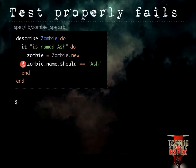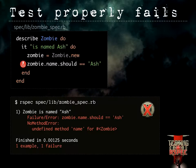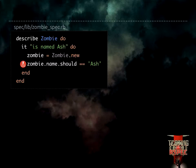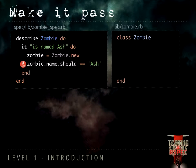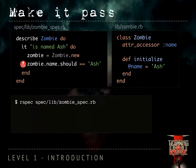Now if we run the test again it properly fails — we have our first failing valid test, so now we can start implementing our zombie. Inside of our zombie we're going to declare an attr_accessor, and inside our initialize method set its name to 'Ash'. If we run our specification now, it passes.